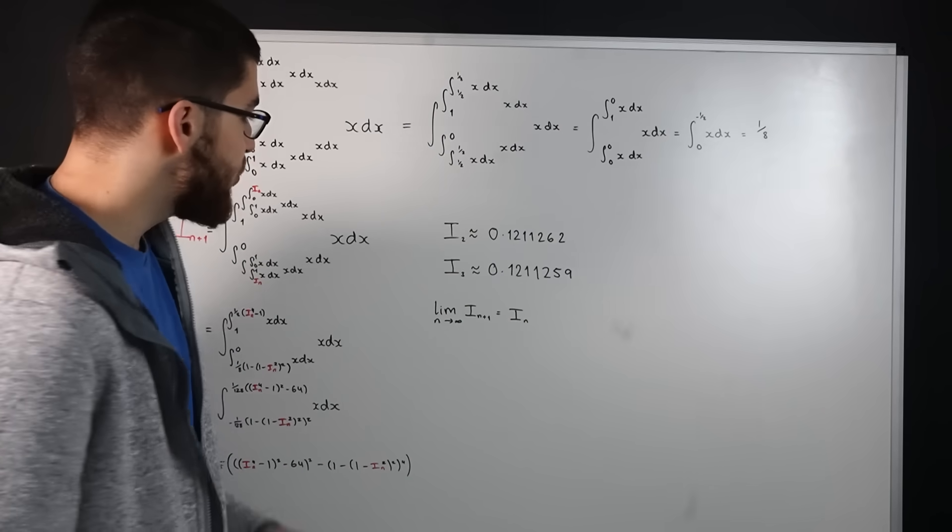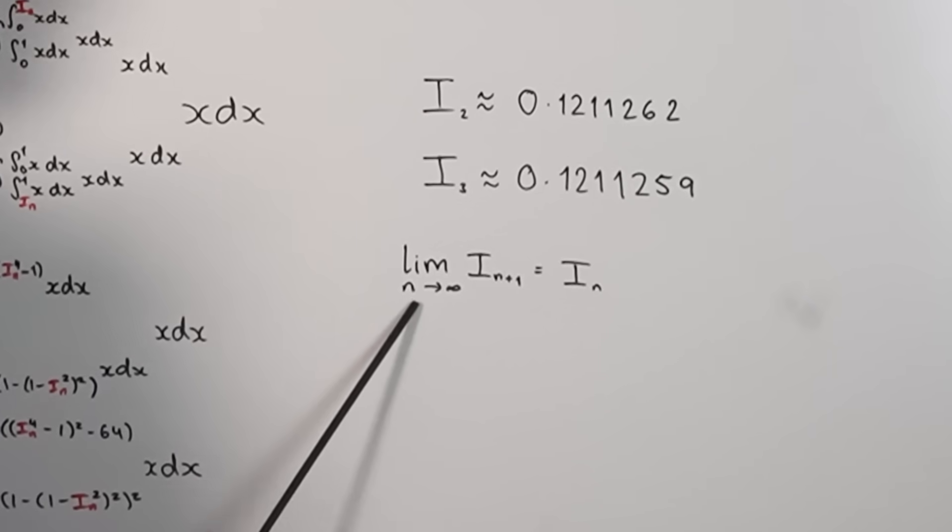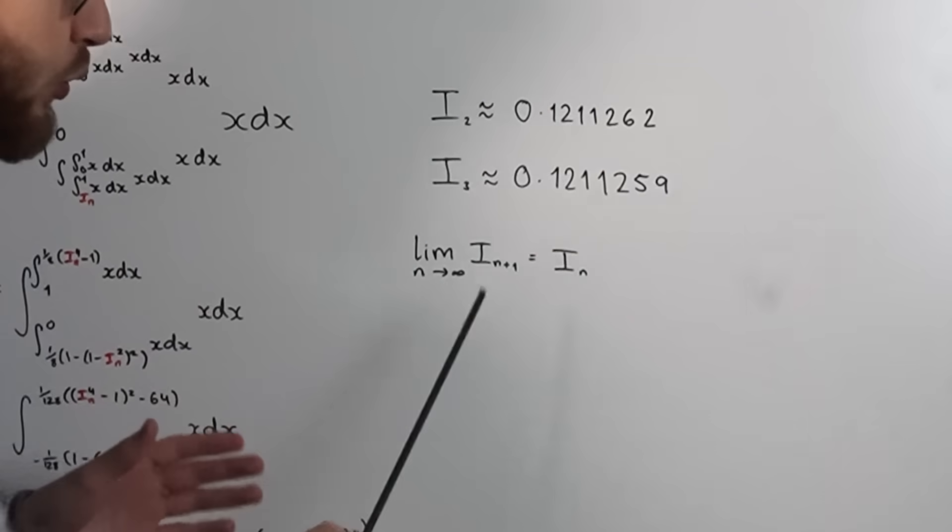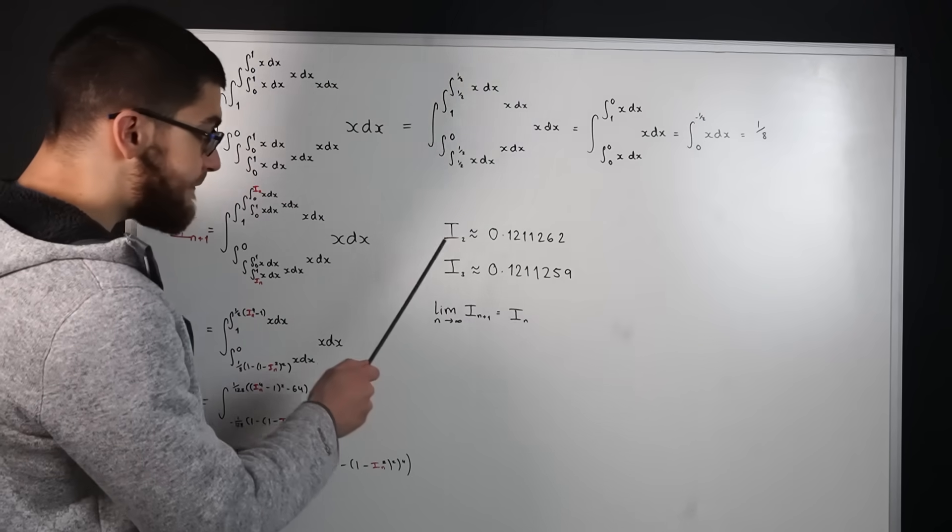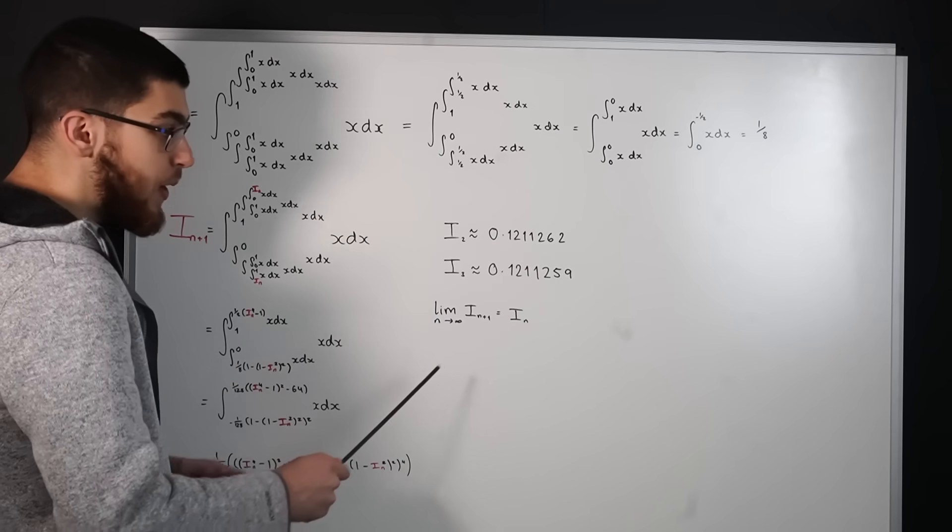So to find where it converges we know that the limit as n tends to infinity of i sub n plus one is equal to i sub n because as n tends to infinity the difference between adjacent terms becomes zero.